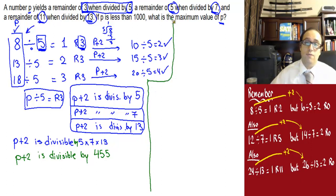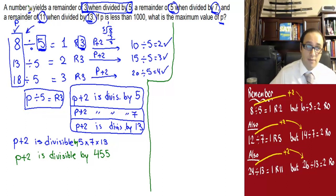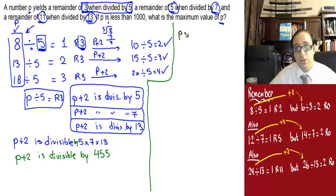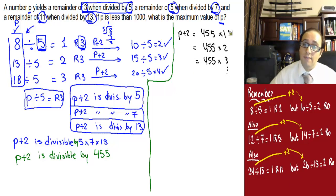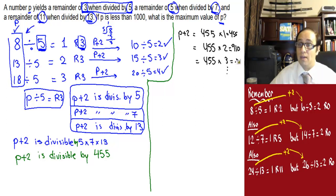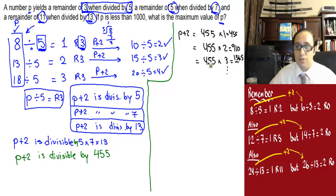Since p plus 2 is divisible by 455, p plus 2 must be a multiple of 455. So p plus 2 equals 455 times 1, which is 455; or 455 times 2, which is 910; or 455 times 3, which is 1,365. Let's verify: 910 plus 455 is 1,365. That's correct.